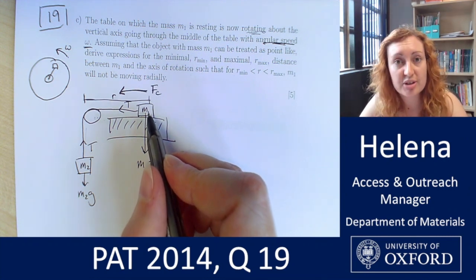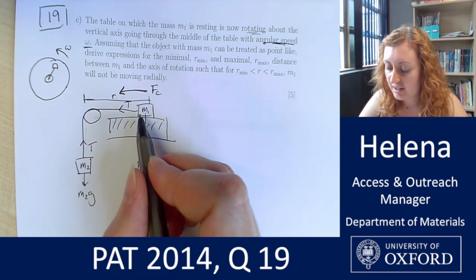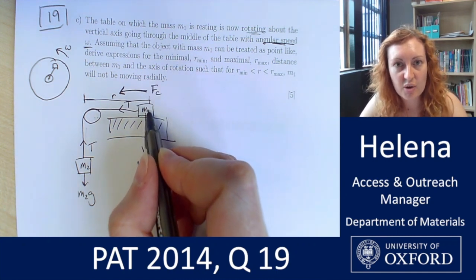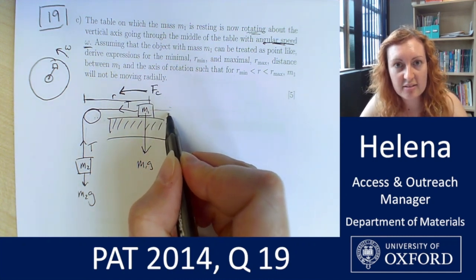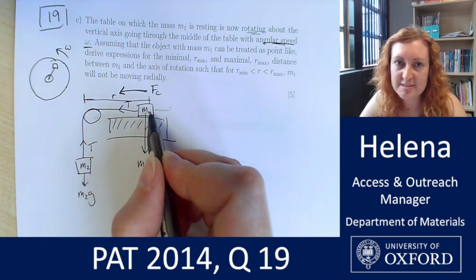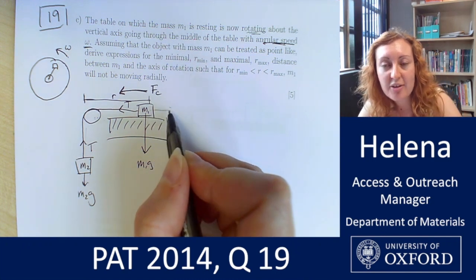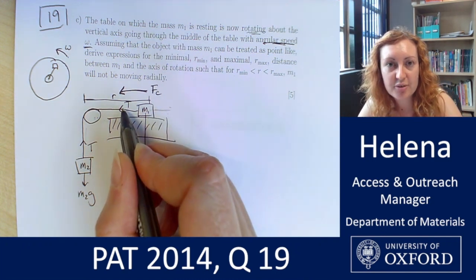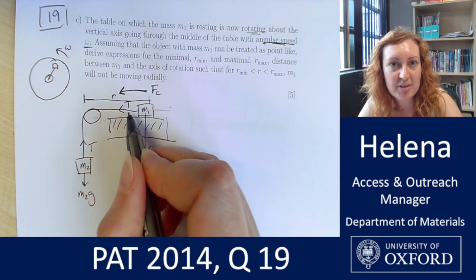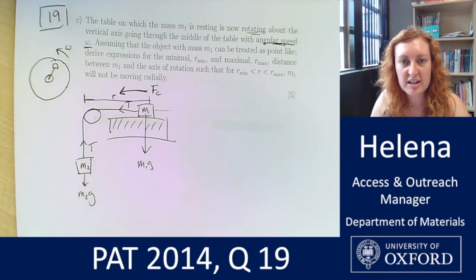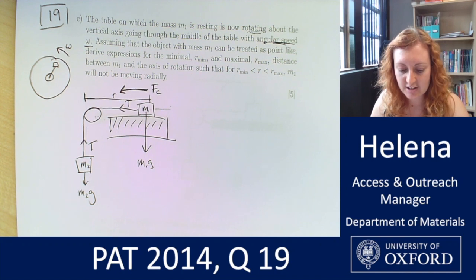So at those two boundary points we can consider how friction will act. So we've got two different scenarios. The frictional force could either be acting in this direction, so away from the hole, that's if the block is moving towards the hole, the friction is acting the other way. However, if the block is wanting to move away from the hole, we would have the frictional force acting in the same direction as the tension. So those are the two scenarios that we've got to consider here.